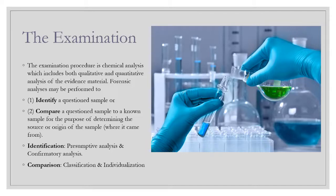When we add a suitable reagent to the unknown sample and it changes color due to a reaction, that positive result — for example, if we are expecting an orange color indicating a narcotic drug and it turns orange — means we identify it as a narcotic drug. That is what we call the presumptive test. We then further confirm which type of narcotic drug it is, whether it is cocaine, heroin, or any other illicit compound.